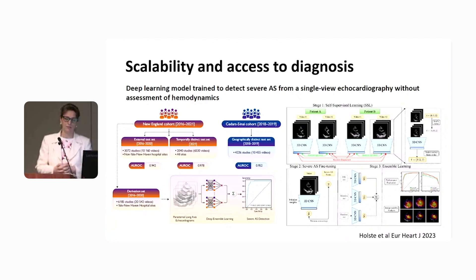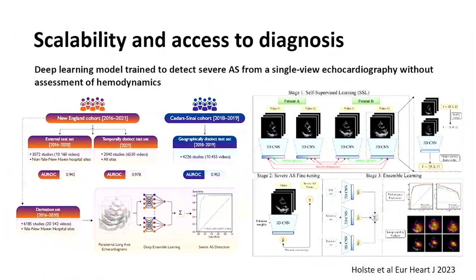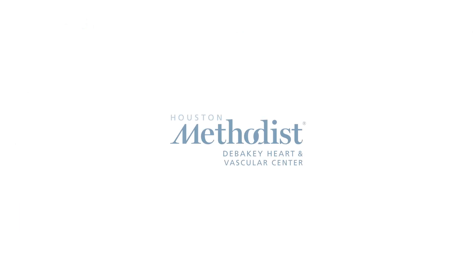In terms of scalability and access to diagnosis, artificial intelligence techniques applied to focused echocardiography can identify, using machine learning, which patients have a high risk of severe aortic stenosis. Those patients can then be referred to a center for complete echocardiography and a proper first diagnosis. This would be a solution to increase access to echocardiography and improve diagnostic reach.